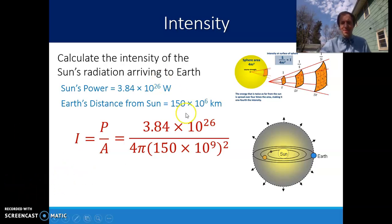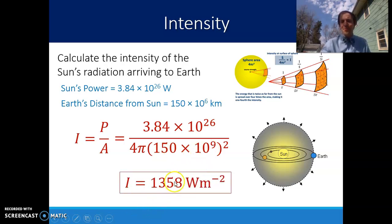So if we plug in these values, the power being 3.84 times 10 to the 26th watts, and the area 4 pi times the distance from the sun squared, we get an intensity that's about 1,358 watts for every square meter.